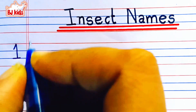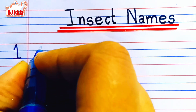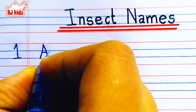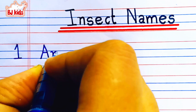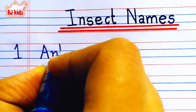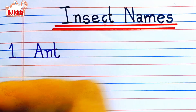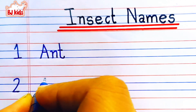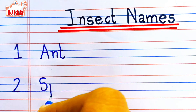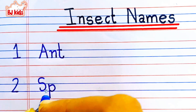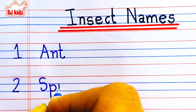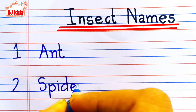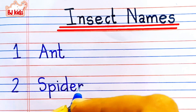Hello everyone, in this video we will write the names of insects. Let's get started. The first one is ant, A-N-T, ant. The second is spider, S-P-I-D-E-R, spider.